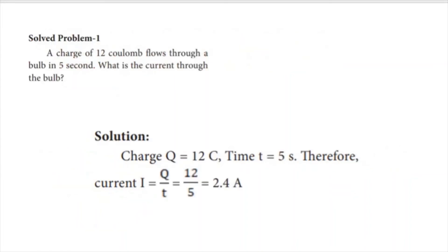Here is a solved problem. A charge of 12 coulombs flows through a bulb in 5 seconds. What is the current through the bulb? Given: charge Q is equal to 12 coulombs, time T is equal to 5 seconds. We need to find the current value.